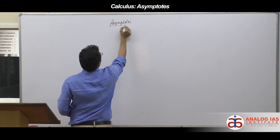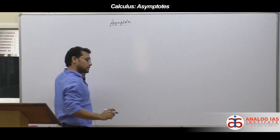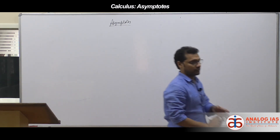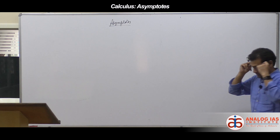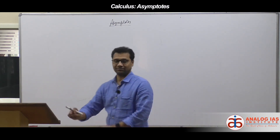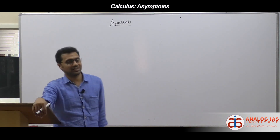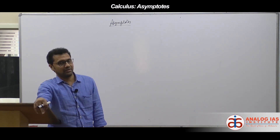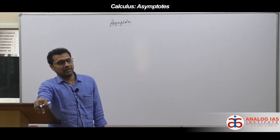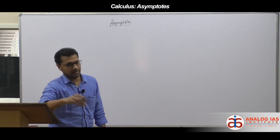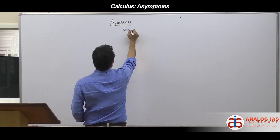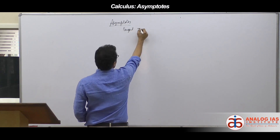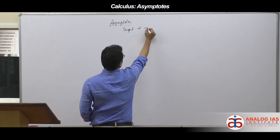Asymptotes — very, very important. First of all, what is an asymptote? It's called a tangent at infinity.